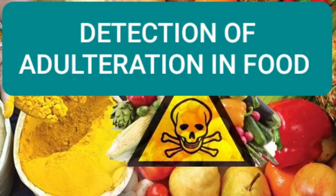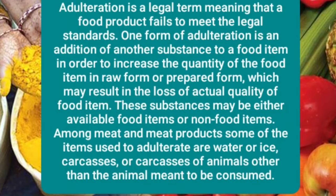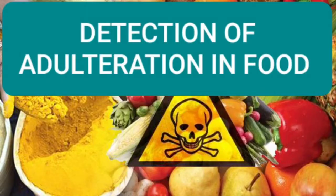Hi guys, I am Shupriti and welcome to my channel. Today I am going to discuss food adulteration. Food adulteration is a legal term meaning that the food product fails to meet the legal standard. Mainly, food adulteration is the addition of another substance to a food item in raw or prepared form, which may result in the loss of actual quality of the food item. Today I will discuss some adulteration examples with you.